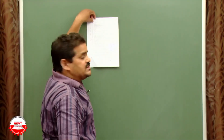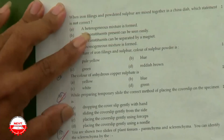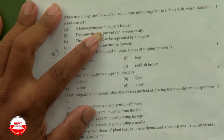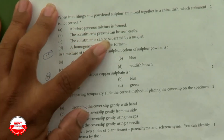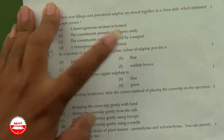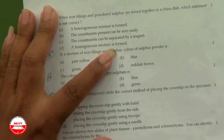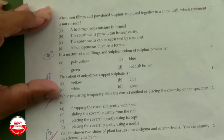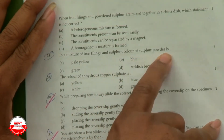Question 27: when iron filings and powdered sulfur are mixed in a china dish, which statement is incorrect? A heterogeneous mixture is formed — correct. The constituents can be separated easily by magnet — correct. A homogeneous mixture is formed — this is incorrect.